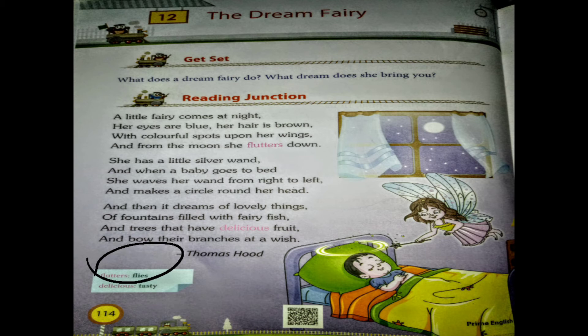Come to the third stanza, and then it dreams of lovely things: of fountains filled with fairy fish, and trees that have delicious fruit, and bow their branches at a wish.